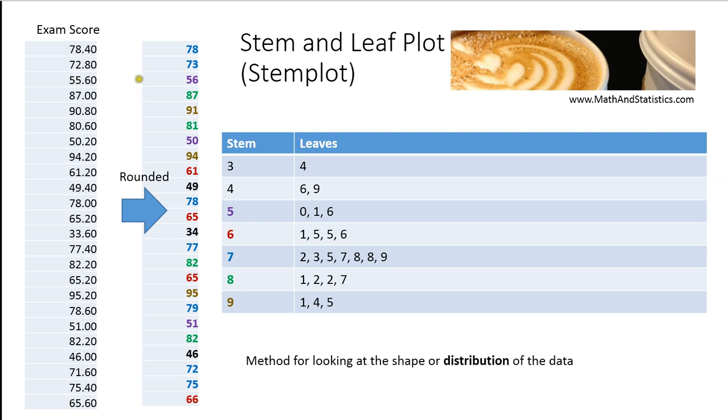So the very first step when creating a stem and leaf plot is to determine what you want your stems to be, how you want to represent them. In the vast majority of cases, the stem is the very first value in each number in your data set. So if I look at all the different data I have here, I know that the smallest value in this data set is 34. My min value here is 34. I also want to know my max value, and my max value happens to be 95.